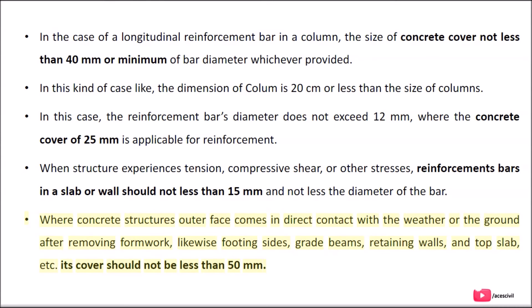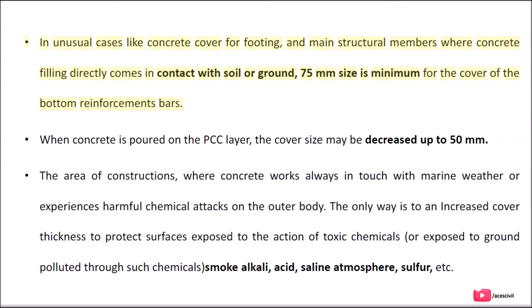When a concrete structure's outer face comes in direct contact with the weather or the ground after removing formwork — such as footing sides, grade beams, retaining walls, and top slab — its cover should not be less than 50 mm. In unusual cases like footings and main structural members where concrete directly contacts soil or ground, 75 mm is the minimum for the cover of the bottom reinforcement bars. When concrete is poured on a PCC layer, the cover size may be decreased to 50 mm.